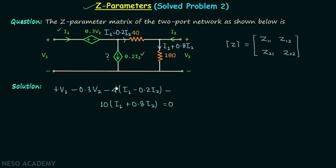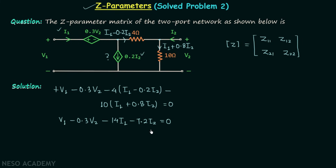Simplifying the input KVL equation gives: V1 minus 0.3·V2 minus 14·I1 minus 7.2·I2 equals 0. We call this equation number 1.